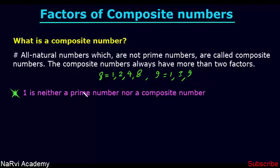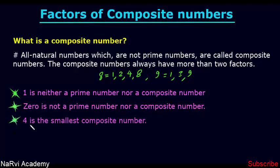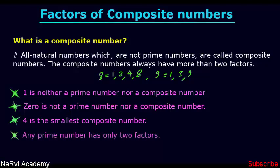Remember, 1 is neither a prime number nor a composite number because 1 has only one factor. Similarly, 0 is also not a prime number nor a composite number because 0 does not have any factor. Also remember, 4 is the smallest composite number because 2 and 3 are prime numbers. And remember, any prime number has only two factors.